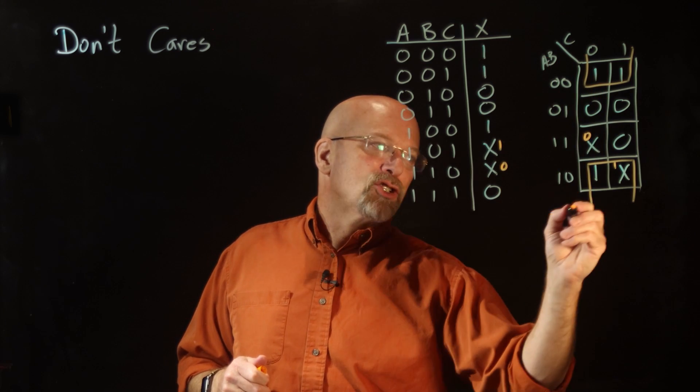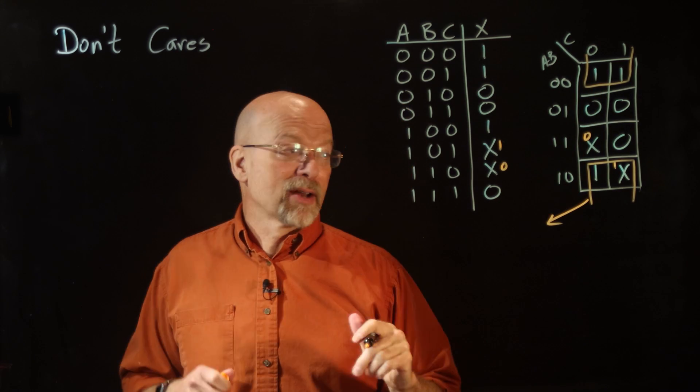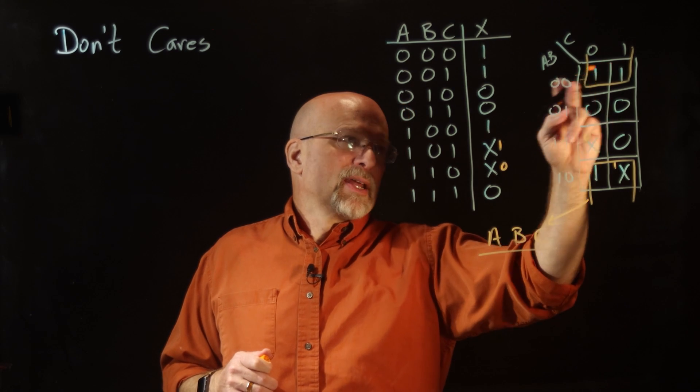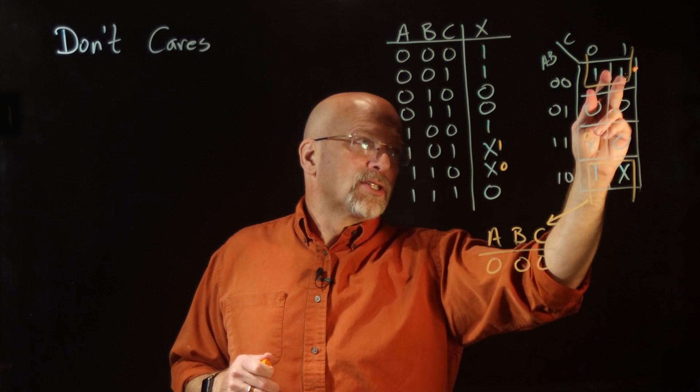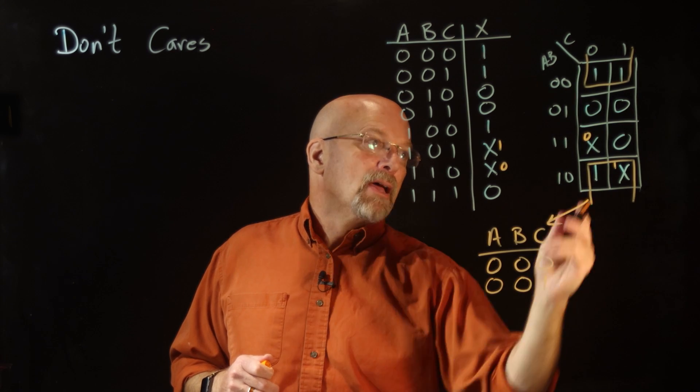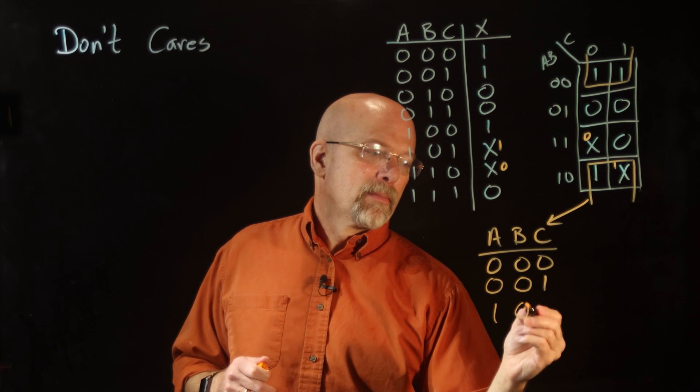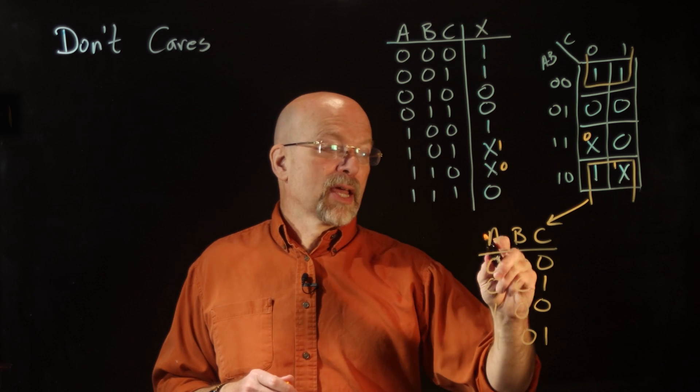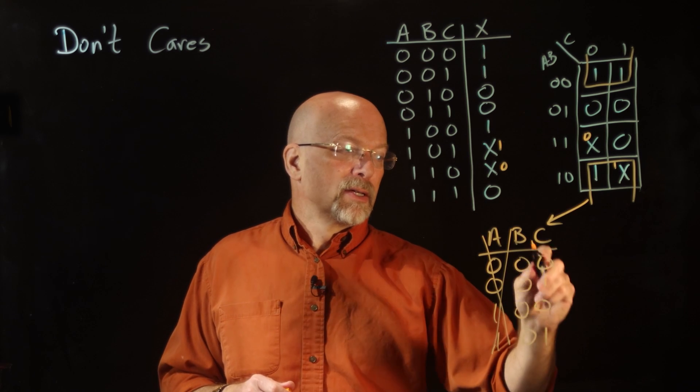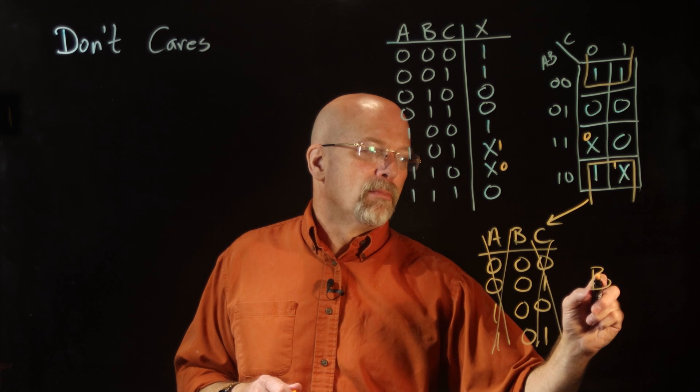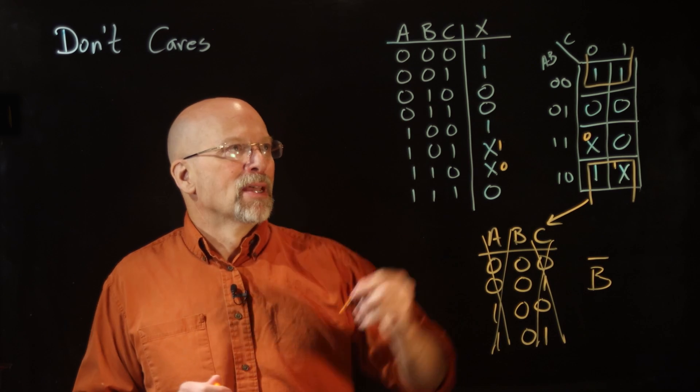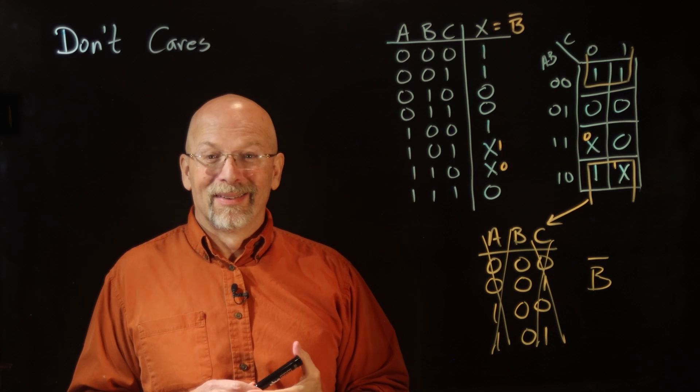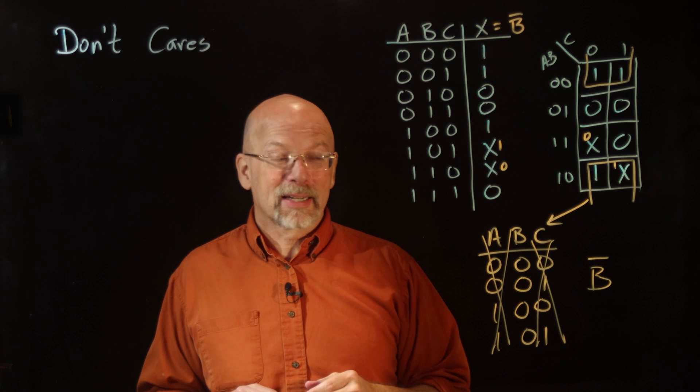Now, what sum of products expression did we get? Well, we've got just one rectangle. This cell right here, 0, 0, 0. This cell right here, 0, 0, 1. This cell right here, 1, 0, 0. And this cell right here, 1, 0, 1. What drops out? What stays the same? A drops out. C drops out. We're just simply left with B bar. So X equals B bar. Wow! Pretty quick way to figure out what to make those X's into.